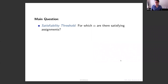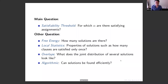What do we want to say about these models? Question number one is just when are there solutions — what is the satisfiability threshold? But once you've answered this, there are a whole range of additional questions: How many solutions are there? What does a randomly chosen solution look like? If you take two solutions chosen at random, what is the joint distribution and how far are they from each other? And algorithmically, can you find one of these solutions in a computationally efficient way, faster than brute force?